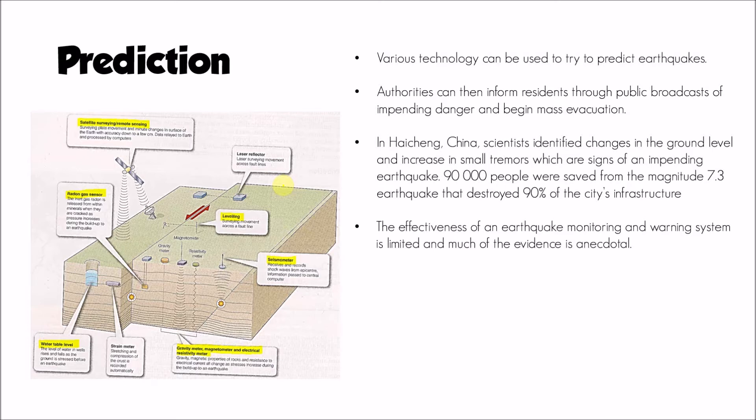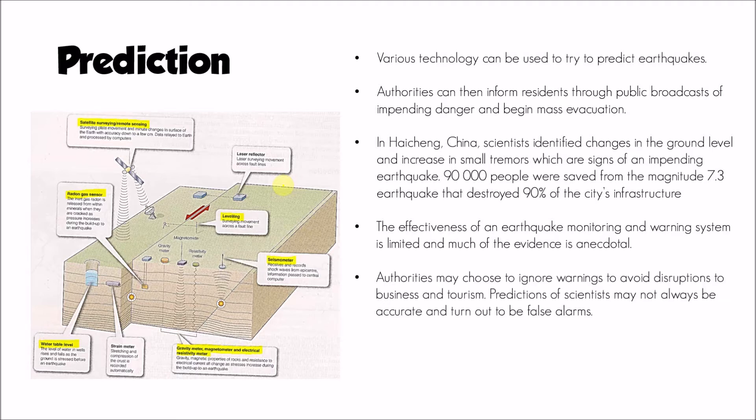However, the effectiveness of earthquake prediction and monitoring systems is very limited. Much of the evidence is anecdotal — changes in the water table, small earthquakes preceding a larger quake, or changes in the Earth's magnetic field tend to be observed after the event. We don't have reliable, repeatable indicators that we can use to predict earthquakes.